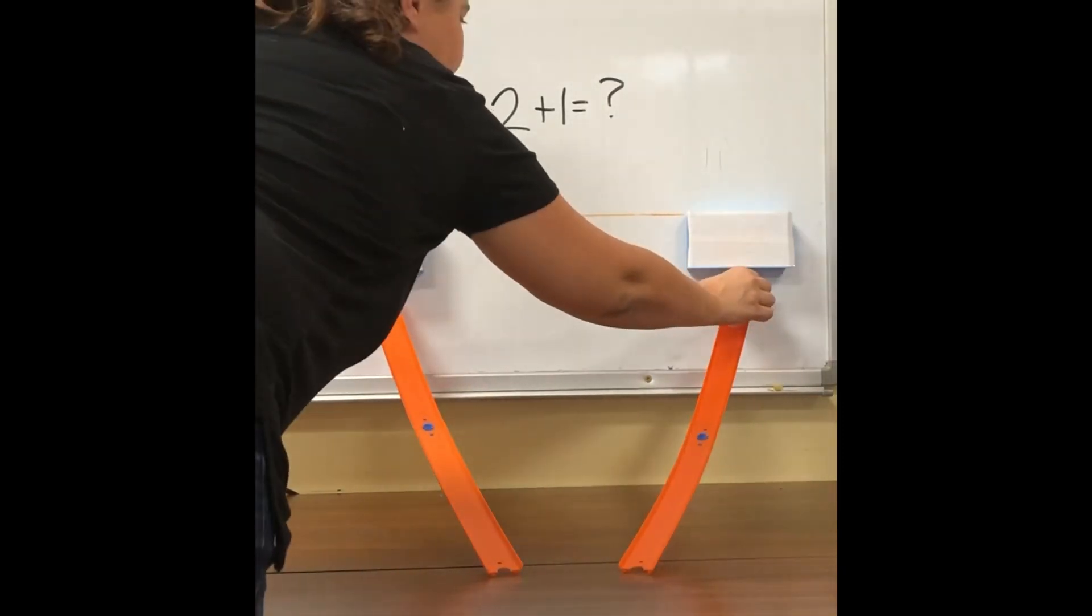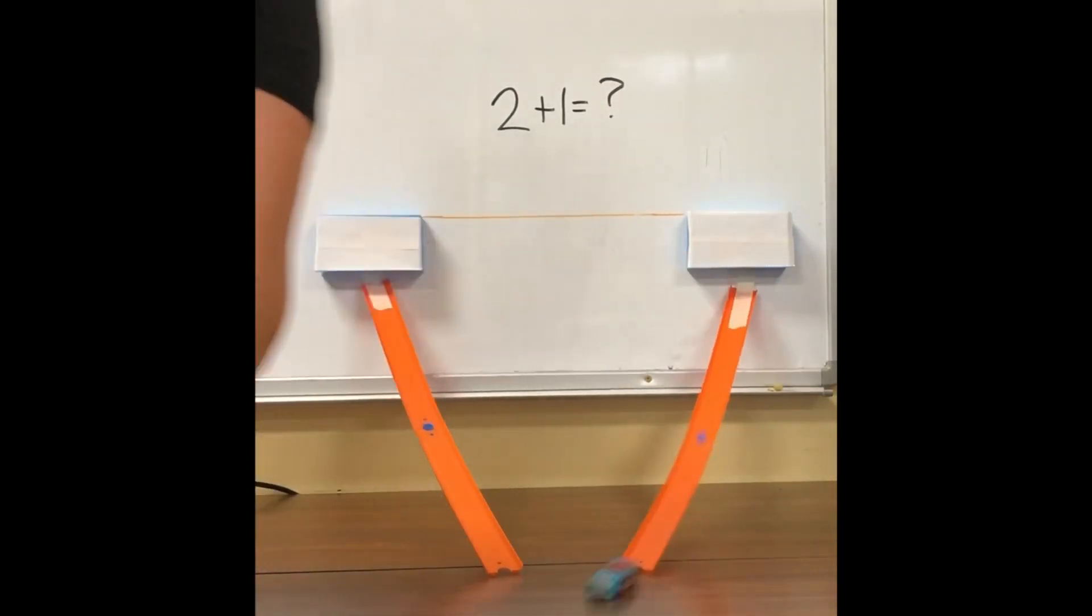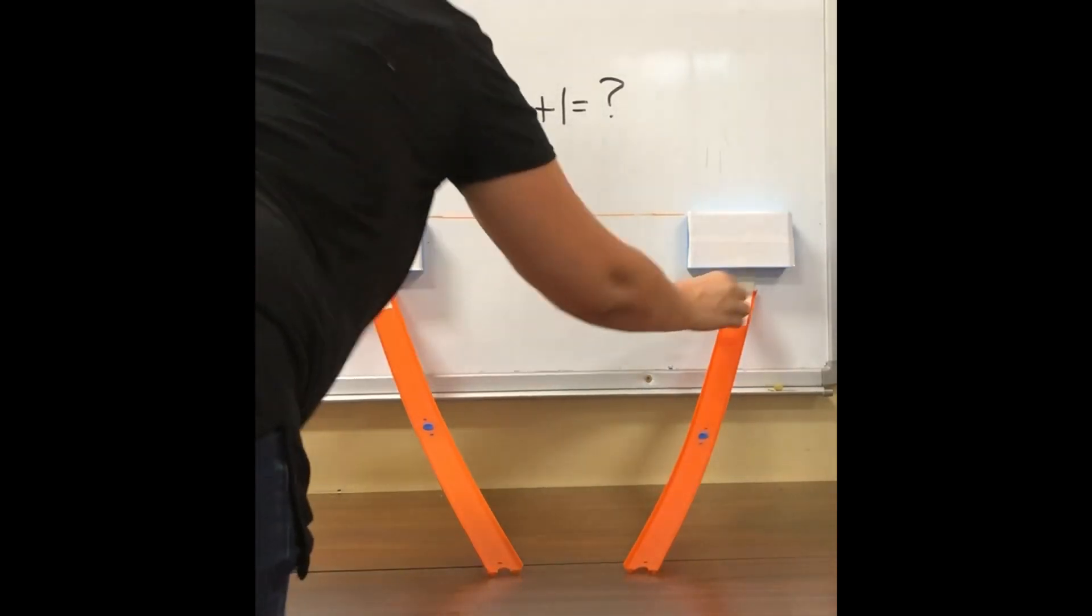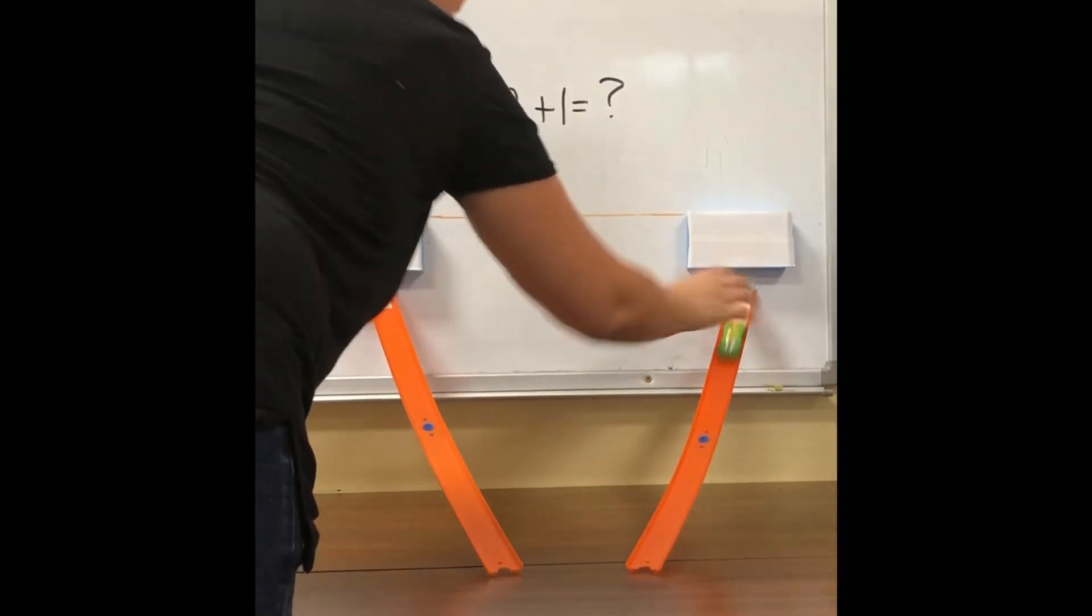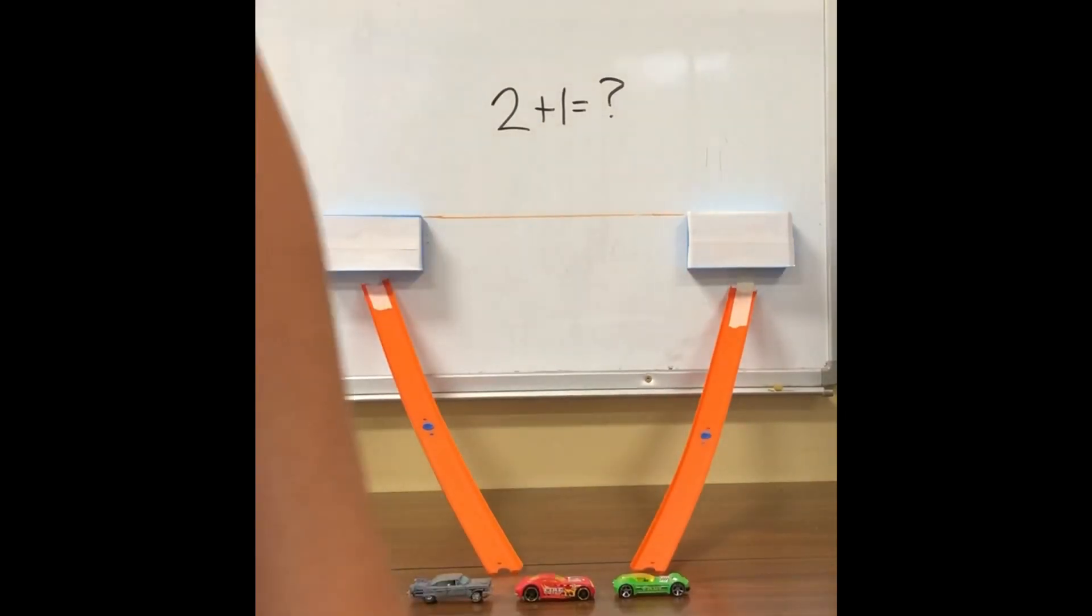Plus two addends. So our total sum is 3. 2 plus 1 is 3. And now we know the unknown.